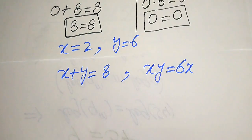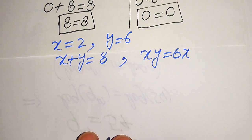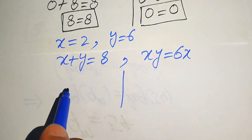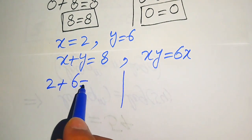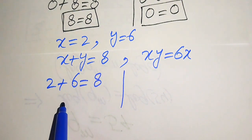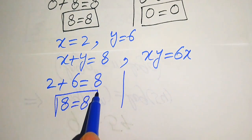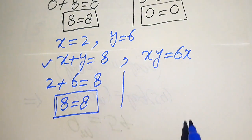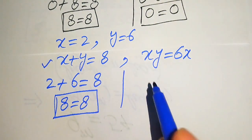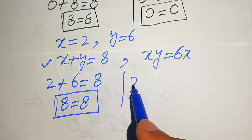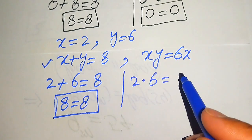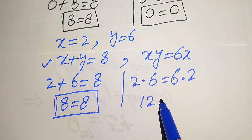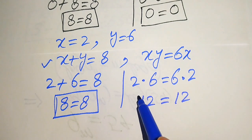Substituting x equals 2 and y equals 6 into the first equation: 2 plus 6 equals 8, which checks out. For the second equation: 2 times 6 equals 12, and 6 times 2 also equals 12, so 12 equals 12, which is satisfied.